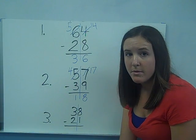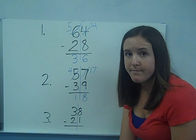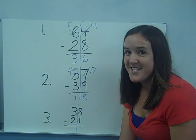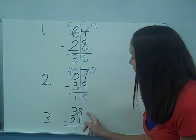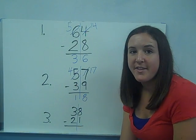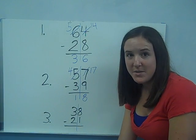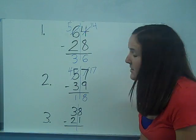Eight minus one. Am I going to have to regroup? If you said no, you are correct. Eight is bigger than one. If the top number is bigger, you can go figure. Eight minus one is seven.